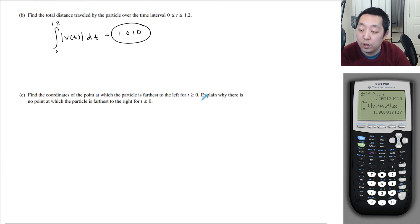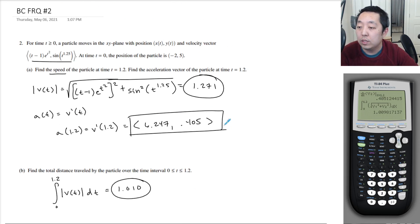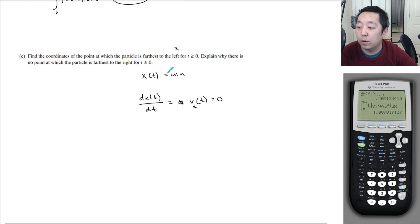Find the coordinates of the point which the particle is furthest to the left for t greater than or equal to 0. Explain why there's no point where the particle is furthest to the right. So farthest to the left is the x-coordinate. So I want to take the x-coordinate. And furthest left means its velocity is at a minimum because it's gone as far left as possible. Or its velocity is 0. Its position is a minimum. So you want x of t to be a minimum. And so we want to calculate dx dt and set it equal to 0. I want to know when the velocity is 0. So this is the same as saying when the velocity of the x-component is 0.